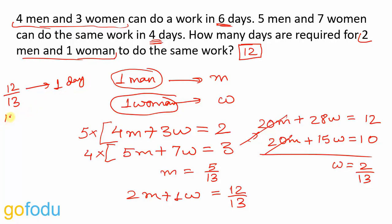So total 12 units will be completed by them. This total work will be completed by them in 1 upon 12 by 13 into 12 days which will come out to be 13 upon 12 times 12. 12 and 12 will get cancelled. 13 days is our final answer.